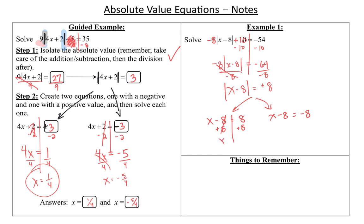Little one-step equation. Add 8, x equals 16. There's one answer. And x could also equal negative 8 plus 8, goose egg.